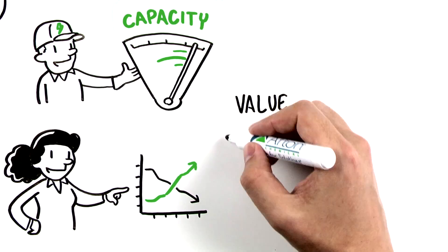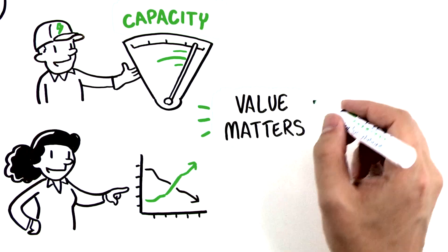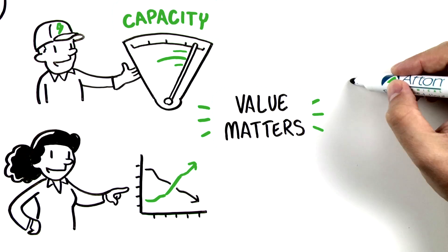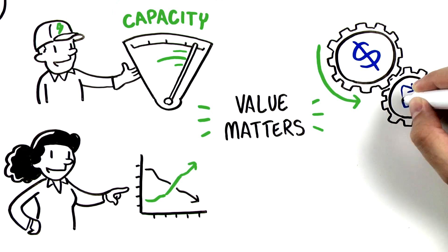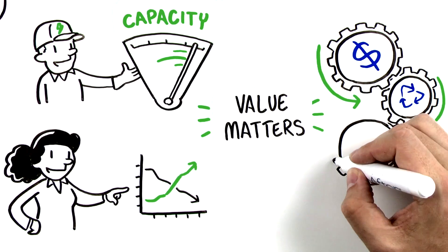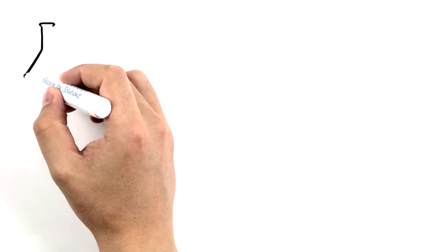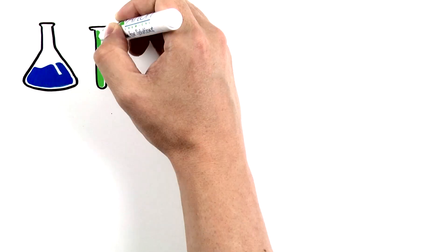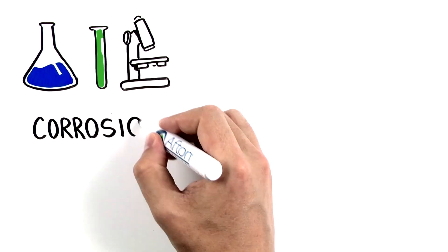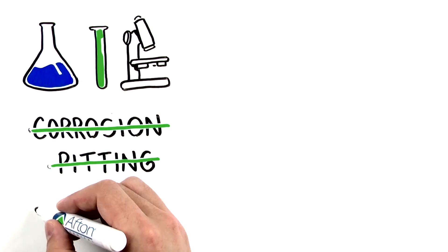Because value matters, we consider efficiency from every angle. From the cost of the fluid, to its life, to its ability to extend the machine's productivity. The result is a range of chemistries that help prevent everything from corrosion to pitting to oxidation.